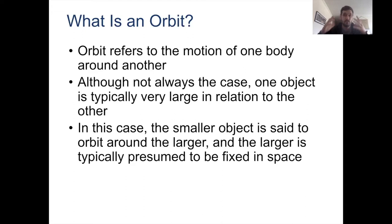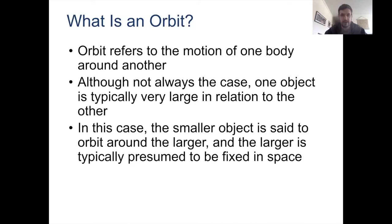Although not always the case, most of the time one of those bodies is way more massive than the other — like the sun being bigger than the earth, or the earth being bigger than a GPS satellite. When that is true, we say the small object is orbiting around the bigger object. We kind of assume the larger object is fixed in space, even though it's not. When we talk about a satellite orbiting the earth, that satellite and the earth together are both orbiting the sun, and the sun and that whole system together is itself orbiting the Milky Way — but that's how we think about it for most of the math.